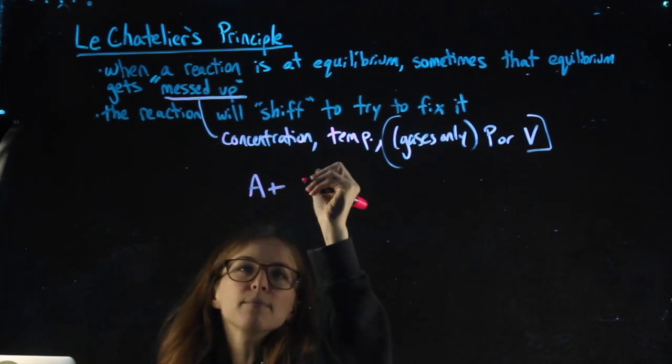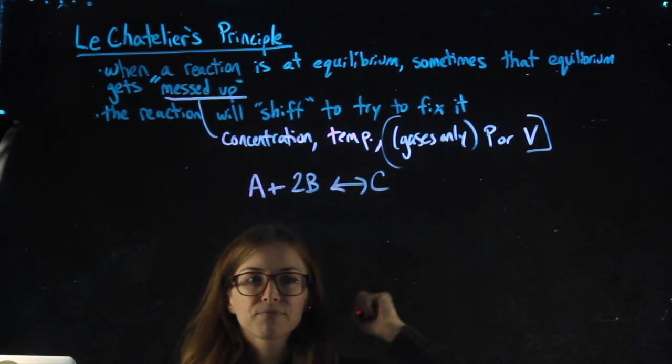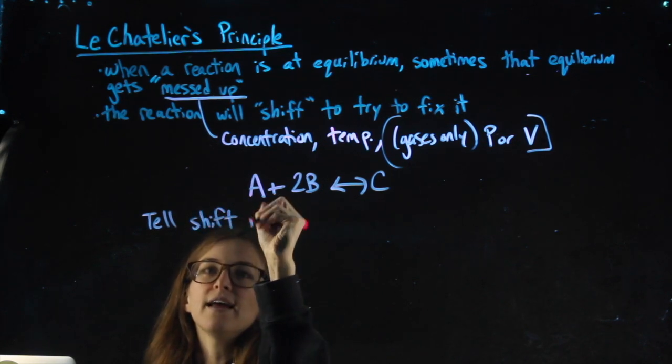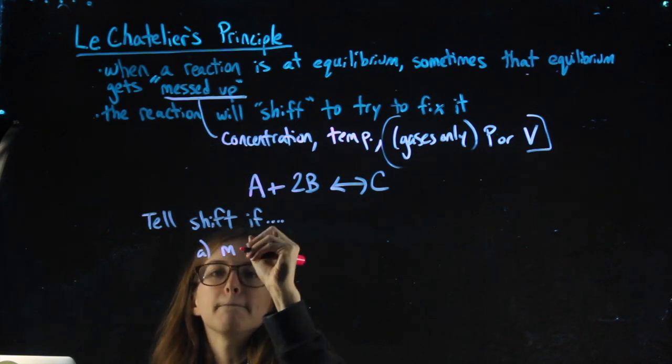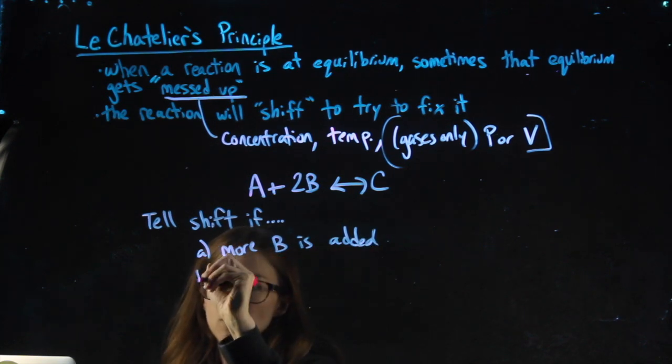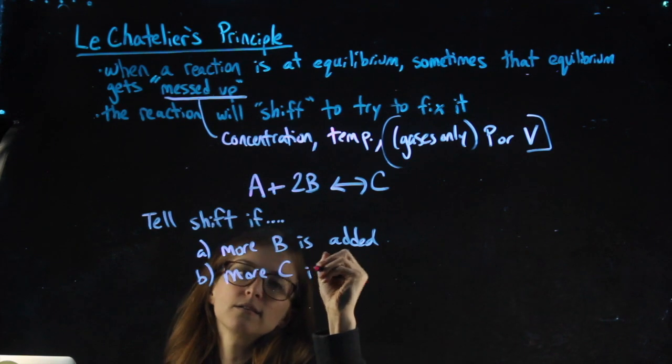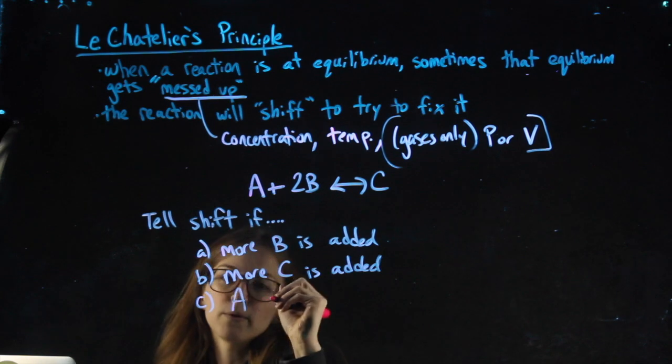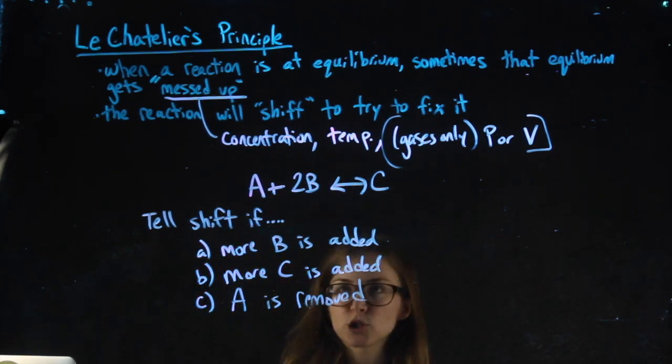Let's say I have this reaction: A + 2B ⇌ C. The question would say something like, tell the shift if more B is added, more C is added, or some A is removed. This is an example of what the question would look like.